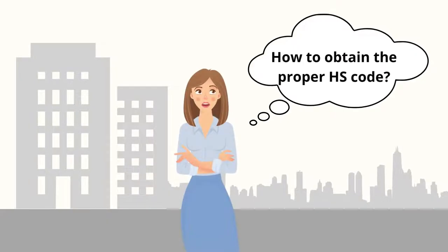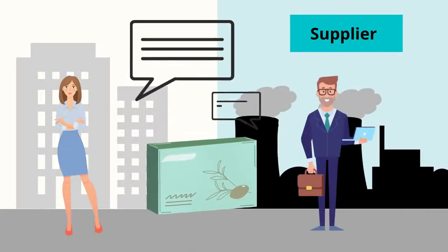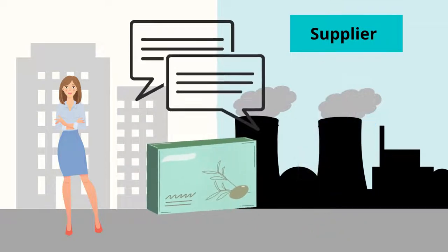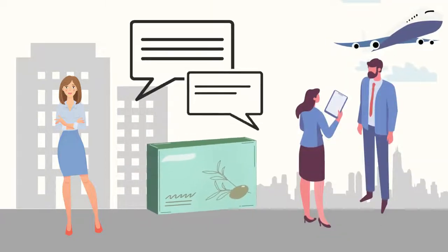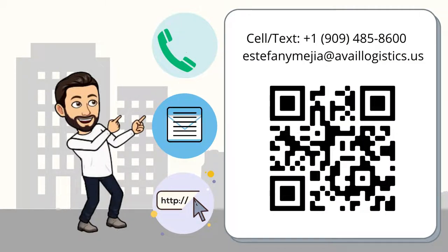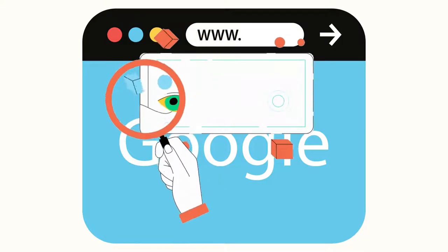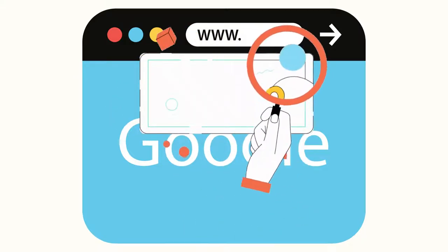How to obtain the proper HS code? First, ask your supplier — they should know best about their product. Secondly, find a freight forwarding company and ask them; you are welcome to ask us at Avail Logistics, please check our contact in the video description. Finally, do your homework and search on Google, which we will show you later.